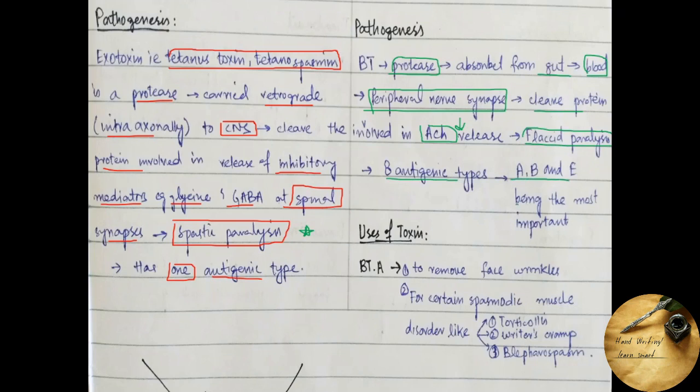It has eight antigenic types: A, B, and E being the most important antigenic types of botulinum toxin. The A botulinum toxin is medically important as it is used to remove face wrinkles. It is also used in certain spasmodic muscle disorders like torticollis, writer's cramp, and blepharospasm.